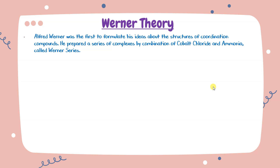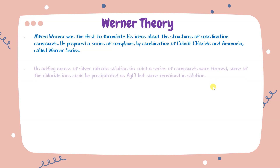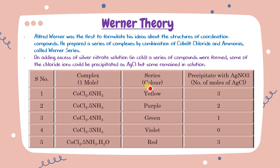Werner prepared a series of complexes by combining cobalt chloride and ammonia, called the Werner series. Cobalt shows +3 oxidation number, and its coordination number is generally double the oxidation number — so coordination number is six. He kept Co oxidation number as three and coordination number as six while making various possible structures.